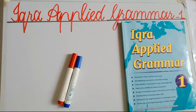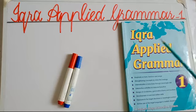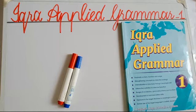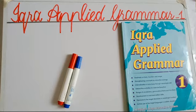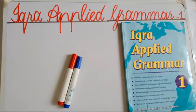Bismillahirrahmanirrahim, Assalamu Alaikum Rahmatullahi Wabarakatuhu. How are you, dear students? I hope you all are fine. Welcome to lesson number one of unit number eight from Ikra Applied Grammar One. We have completed our first seven units, and I hope you have completed any pending work. If any topic is incomplete, please revise and check the lessons again.